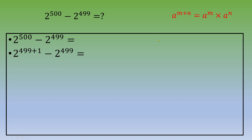Then you apply the power rule, which states that a^(m+n) = a^m times a^n. If you apply this rule to this exercise, you end up with 2^499 times 2, minus 2^499.